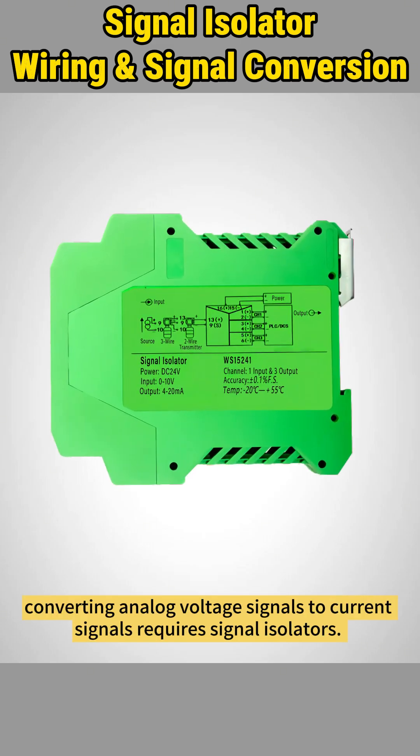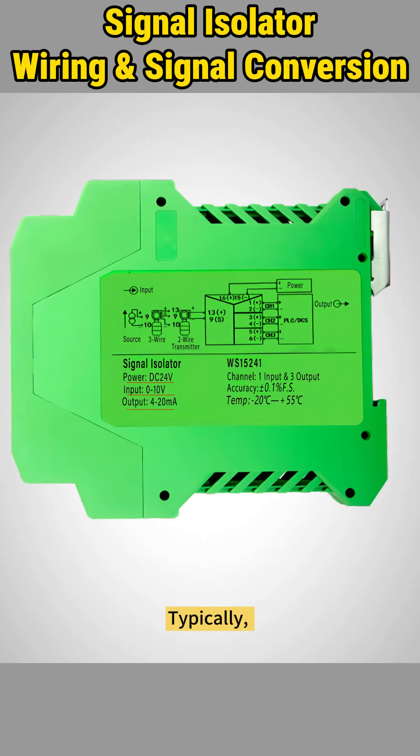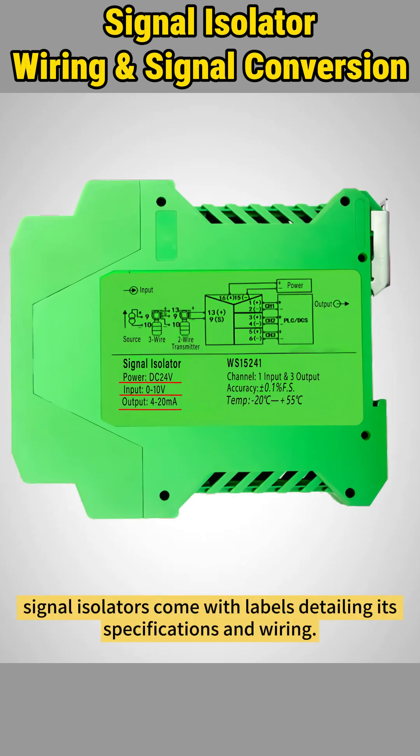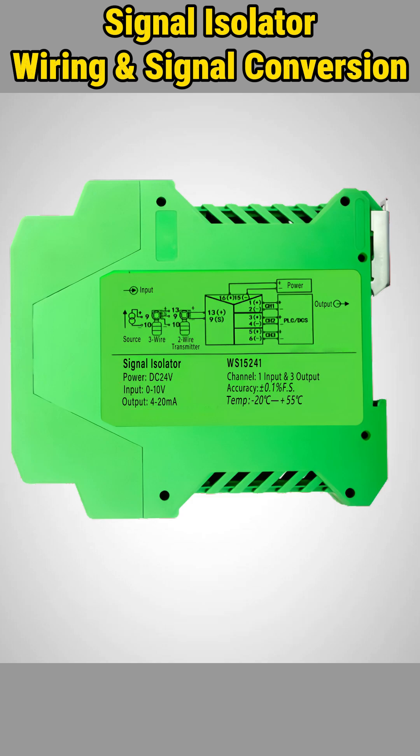In industrial settings, converting analog voltage signals to current signals requires signal isolators. Typically, signal isolators come with labels detailing their specifications and wiring.